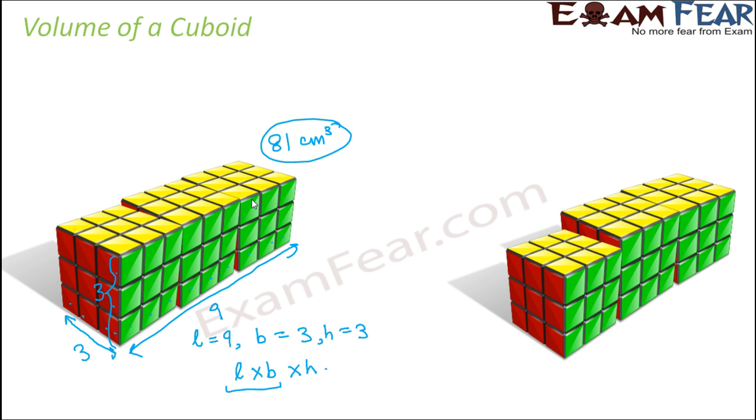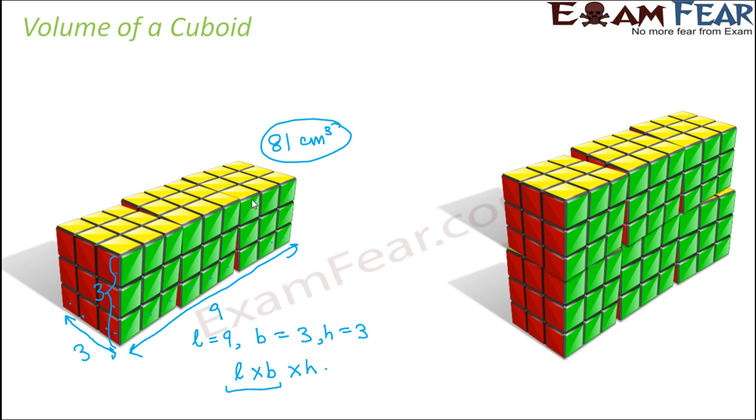Now let us take a second case where we increase the height. This was the first layer. Now on top of this layer we place more cubes. So this is also a cuboid, but this time your length is still 9, your breadth is still 3, but your height has increased to 6. As a result, your volume is 9 into 3 into 6 which is 162 centimeter cube. The moment you increase the height your overall volume increased because the cuboid would occupy more space.